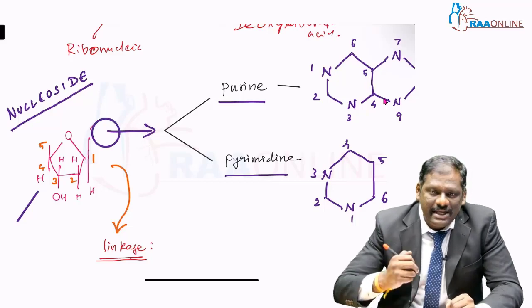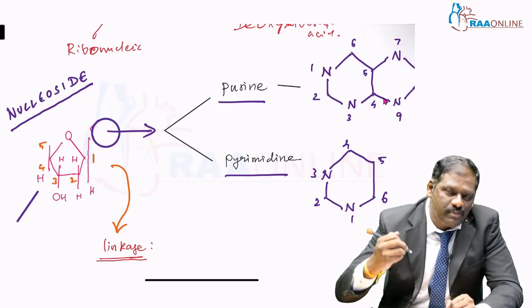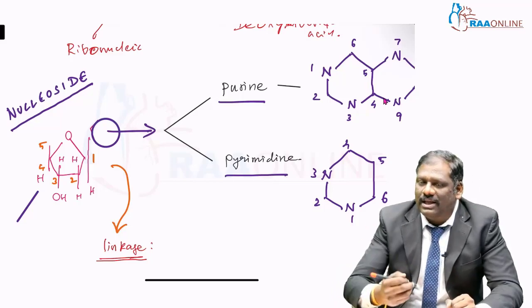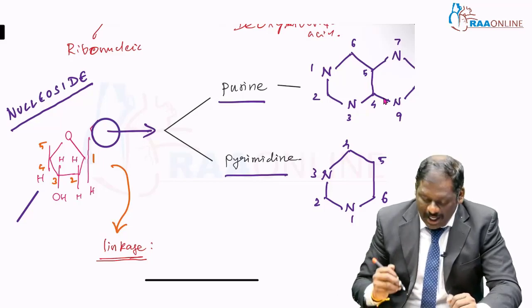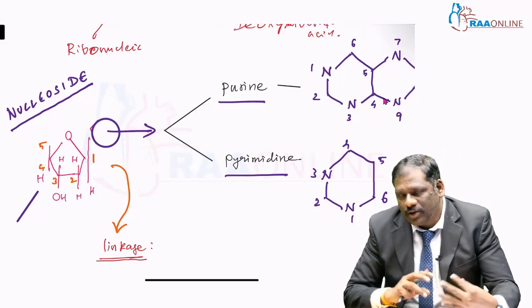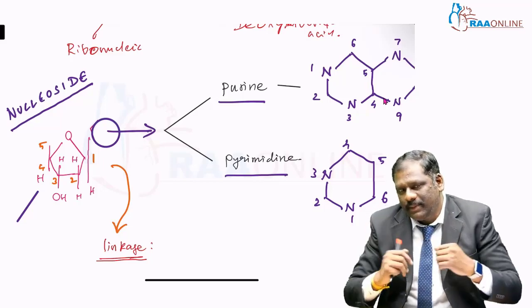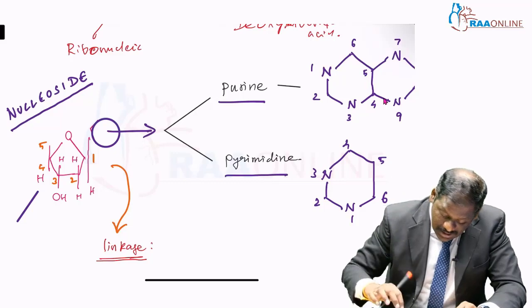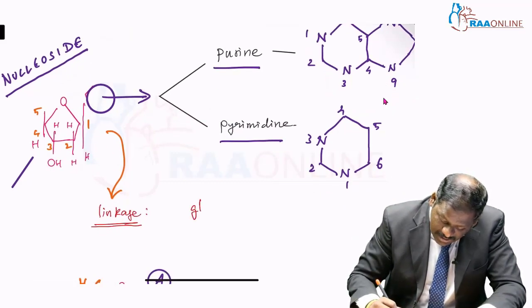Now, this deoxyribose, I told you, has been combined to your nitrogenous base. So what do you think the name of this linkage will be? You are actually glycosylating your bases, glycosylating your purine or pyrimidine. This is a glycosidic linkage.